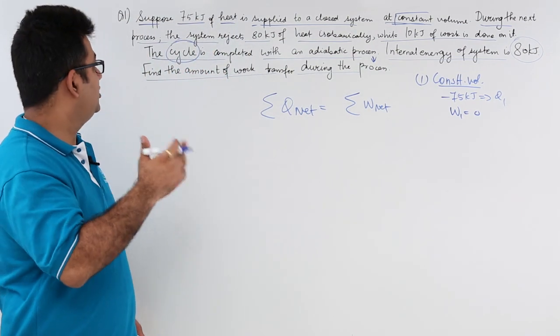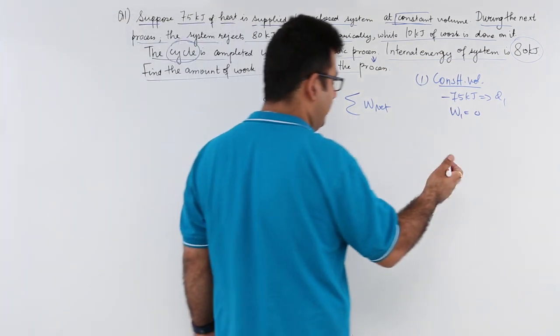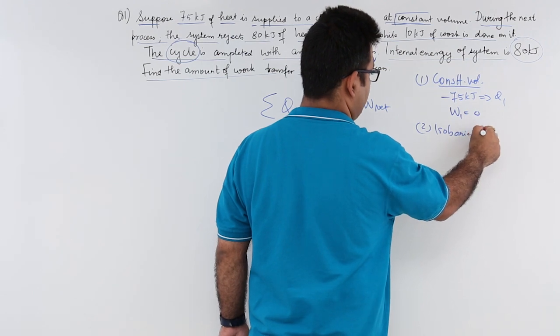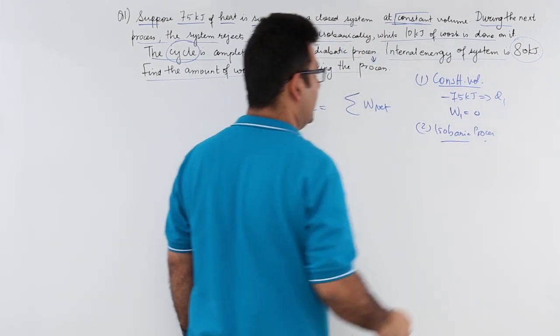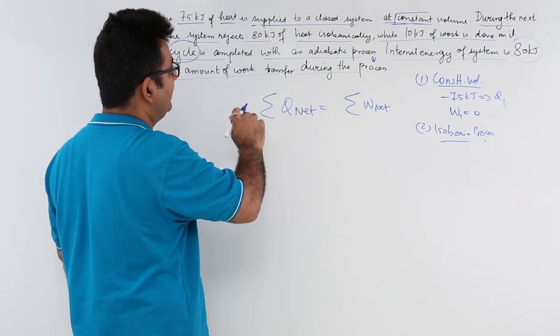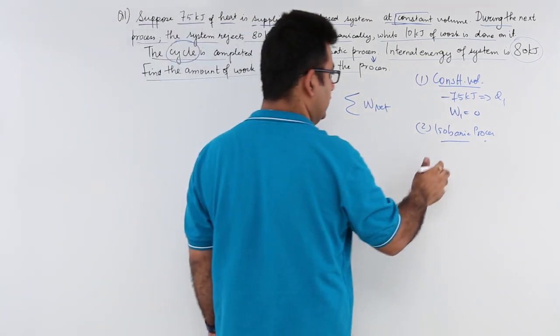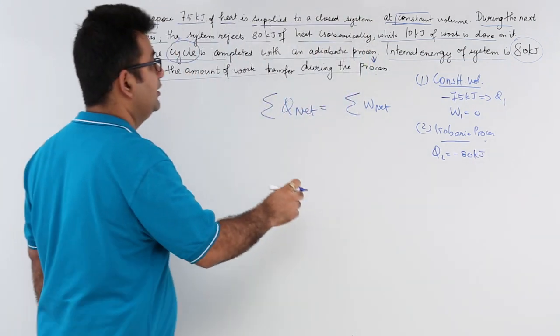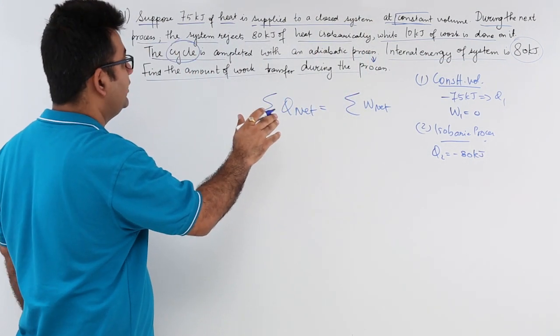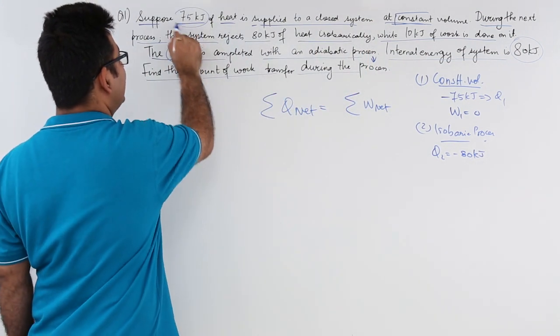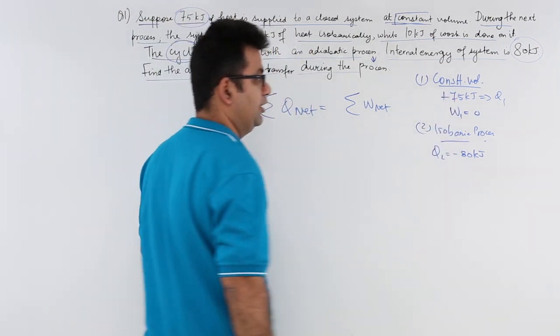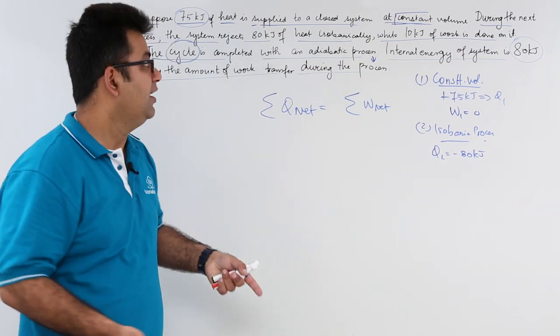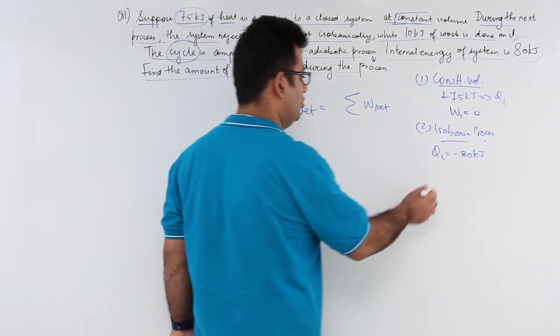During the next process, which is an isobaric process, the system rejects 80 kilojoules of heat, so Q2 is minus 80. You are supplying this much heat so this becomes positive, this is being rejected so this becomes negative. You are also doing some work on the system, so W2 is minus 10 kilojoules.